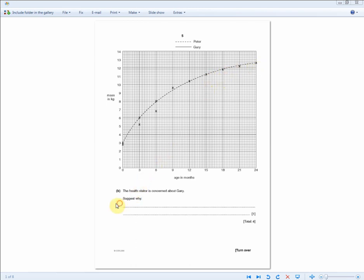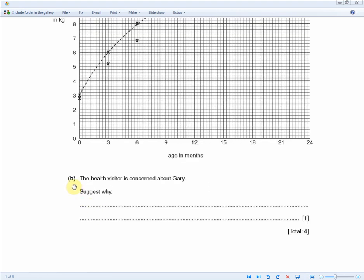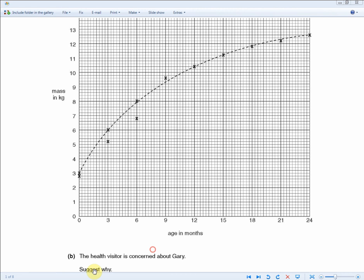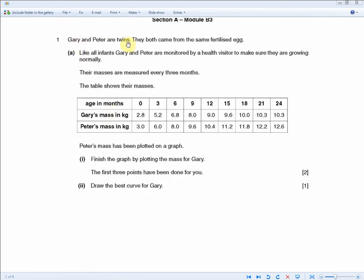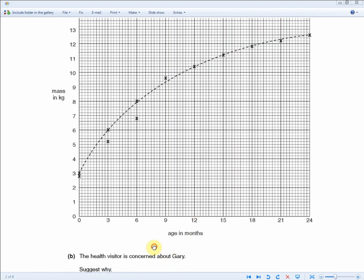So the next question, the health visitor is concerned about Gary. Suggest why? Well, it's pretty obvious because if you go to the information, even if you didn't draw the graph, you're told that they're twins and that the last two points, they start to level off. And as twins, I mean, why is it that Gary is so much lighter than Peter? So the concern is that Gary might be underweight. And by saying that, that would get you the one mark, that Gary might be underweight.